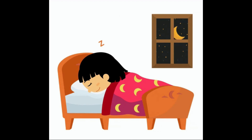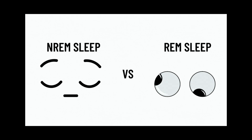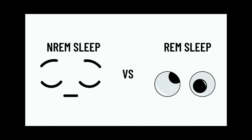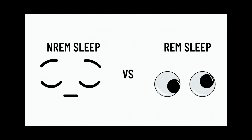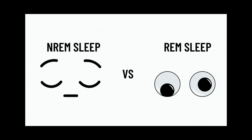Sleep is an active and complex process, defined by reduced perceptual engagement with the environment. Normal sleep is classified into NREM (non-rapid eye movement) and REM (rapid eye movement) sleep, based on polygraphic recordings.